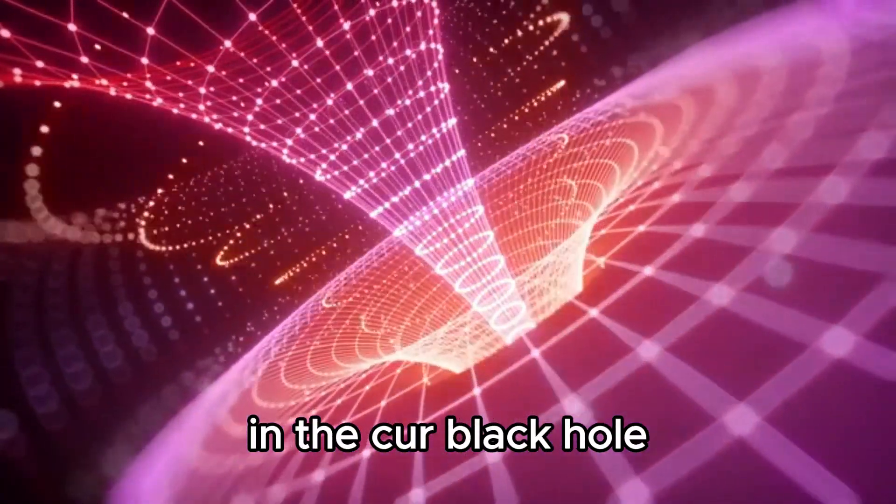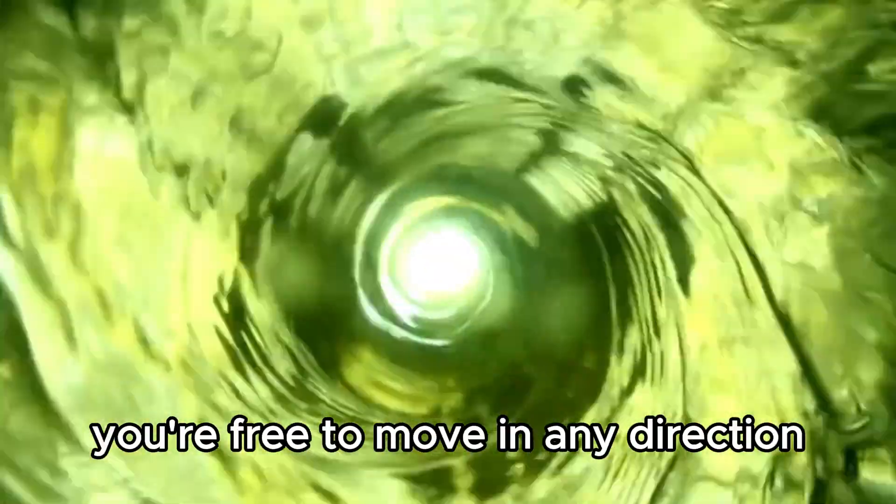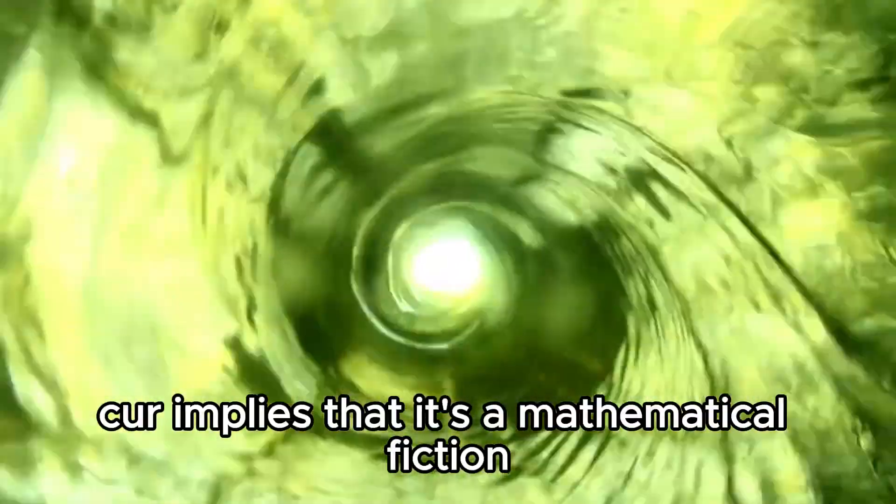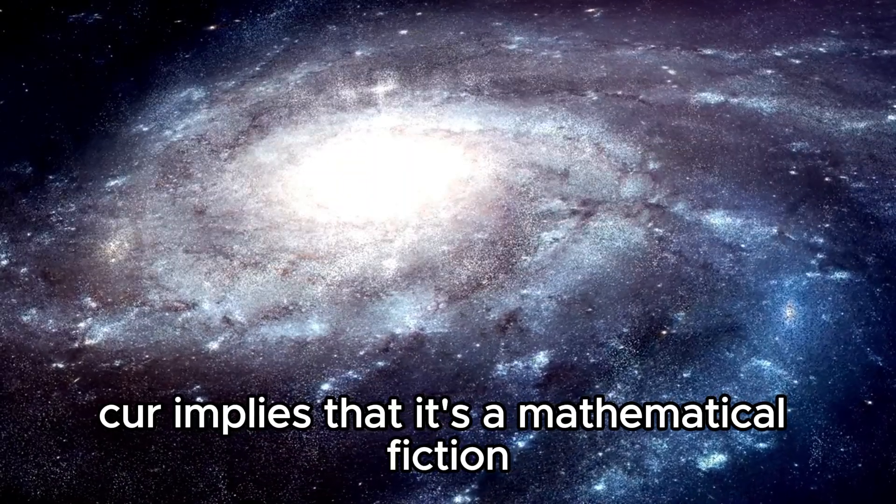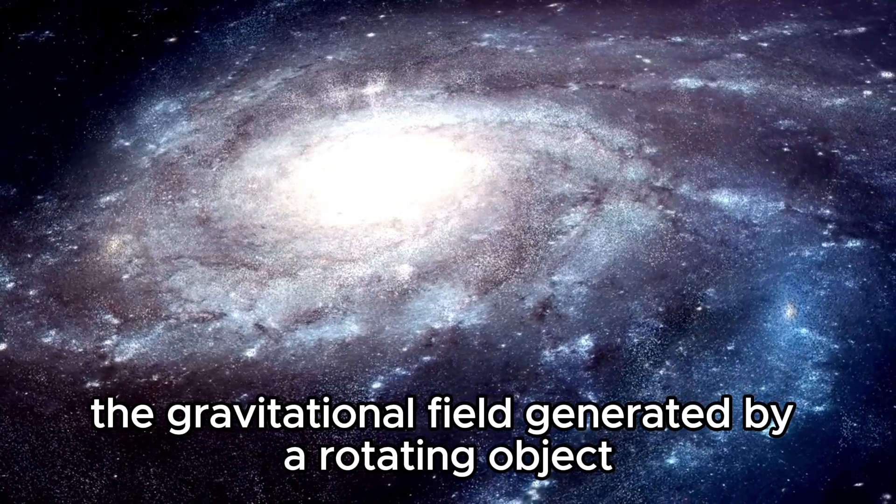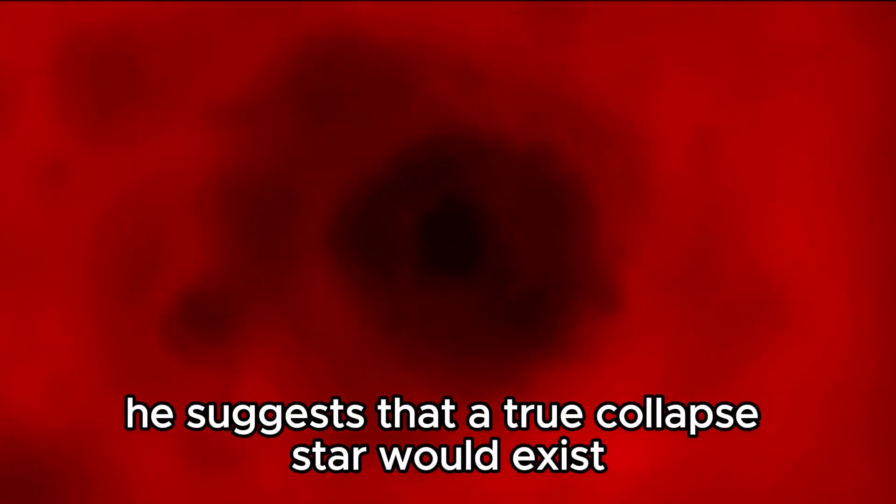In the Kerr black hole, there's an inner horizon, and once you cross it, you're free to move in any direction, even back up. So what's this ring singularity? Kerr implies that it's a mathematical fiction. It's just a convenient way to represent the gravitational field generated by a rotating object. He suggests that a true collapsed star would exist in an extended physical form inside the inner horizon.